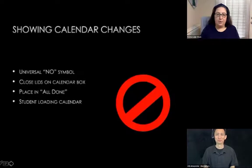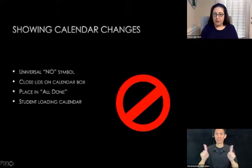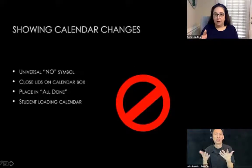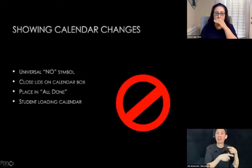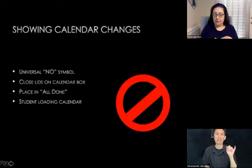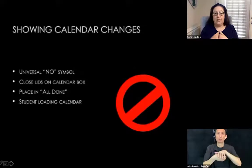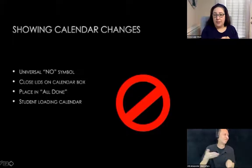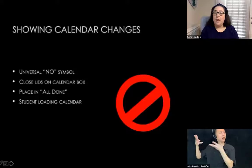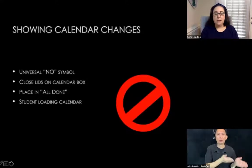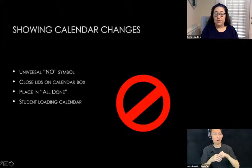Showing changes on a calendar: there are a couple of ways to demonstrate that something has changed. If something is canceled, you may use the symbol of a circle with a line through it, placing it on top of that activity and saying we're not going to do that today. If you're using boxes, you may close the lid on a canceled activity. We may have the child place that activity in the all-done basket. The key is engaging the child — put it in the all-done basket and put something else in its place. Another way to make the process meaningful is having the child load their own calendar and put the events in.